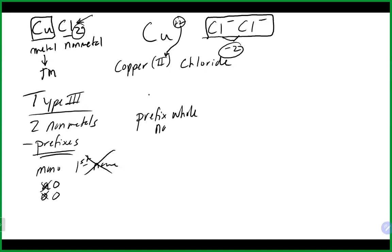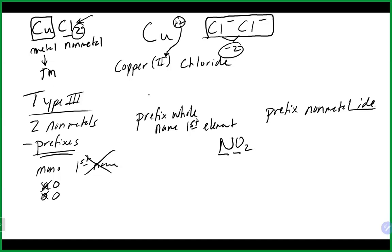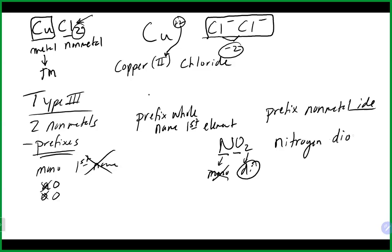For Type 3, we use the prefix if necessary on the first name and the whole name of the first element. The second element also gets a prefix and the 'ide' ending. For example, NO₂: nitrogen and oxygen are both non-metals, so it's Type 3. There's one nitrogen (mono, but we don't use it on the first element), and two oxygens (di). So we write 'nitrogen dioxide.' Any questions on naming?